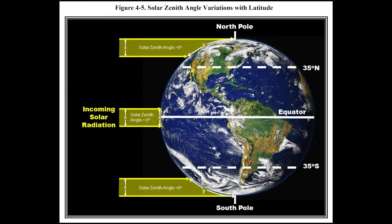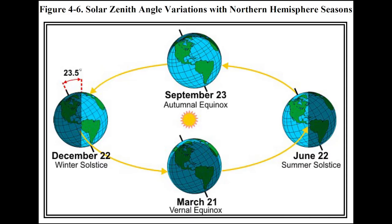Figure 4-4 shows thermals visually, and figure 4-5 shows the same thing we've already talked about — the sun striking the earth more directly near the equator, giving more energy. Figure 4-6 shows the tilt of the earth that causes the seasons as we move around the sun, with the winter solstice around December 22nd being the shortest day of the year in the northern hemisphere.